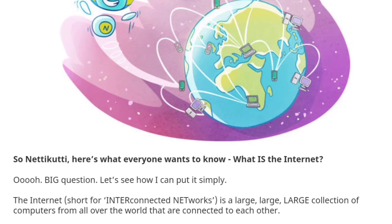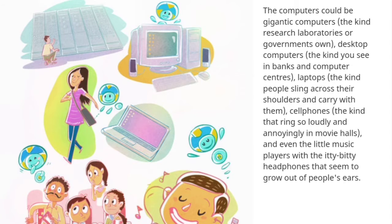The Internet — short for interconnected networks — is a large, large, large collection of computers from all over the world that are connected to each other. The computers could be gigantic computers, the kind research laboratories or governments own; desktop computers, the kind you see in banks and computer centers; laptops, the kind people sling across their shoulders and carry with them; cell phones, the kind that ring so loudly and annoyingly in movie halls; and even little music players with itty-bitty headphones that seem to grow out of people's ears.